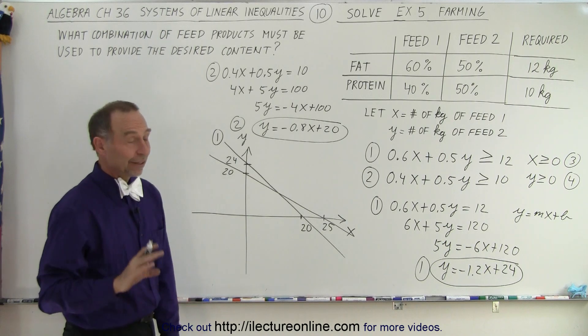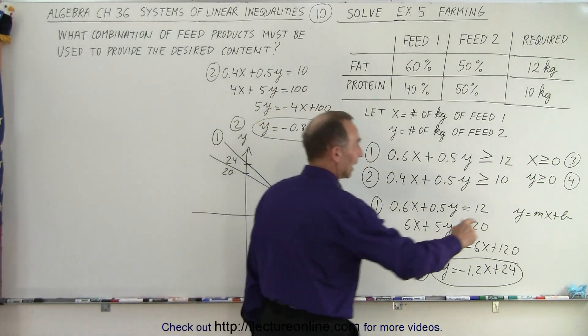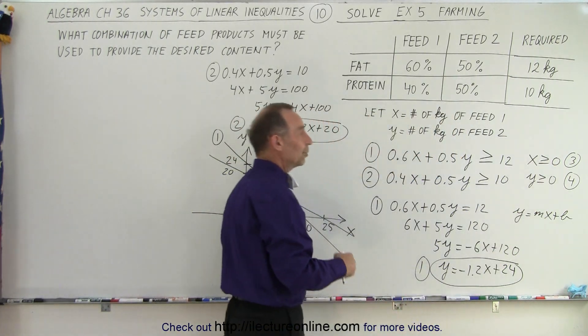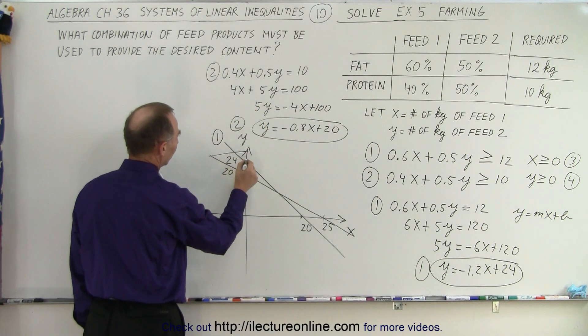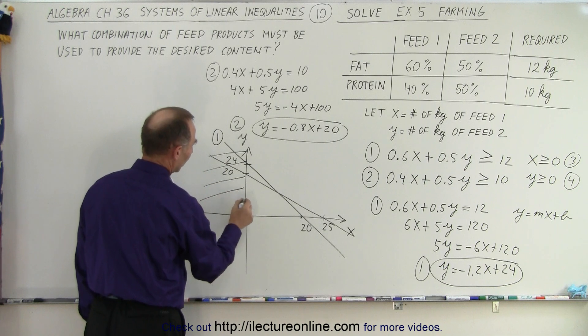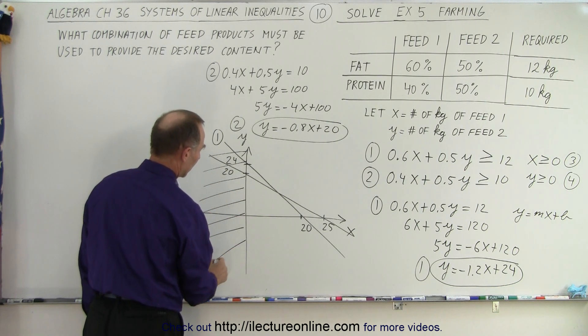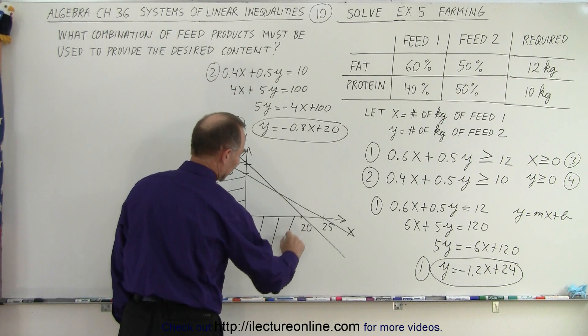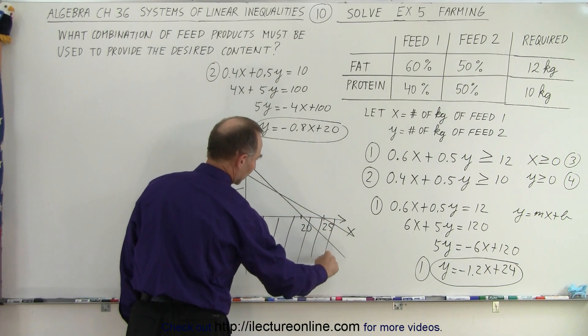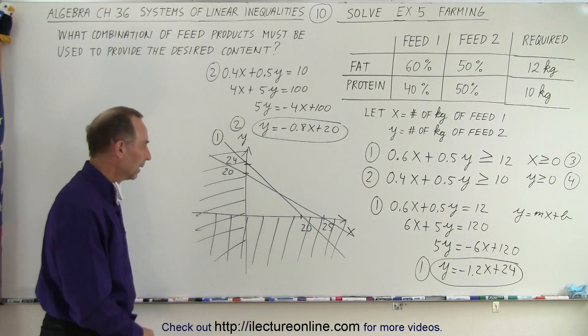And of course, now we want to find the correct region. First of all, we can take these two conditions and know that x must be greater than 0 and y must be greater than 0, which means anything to the left of the y-axis does not apply. And anything below the x-axis does not apply because we can't have negative quantities.